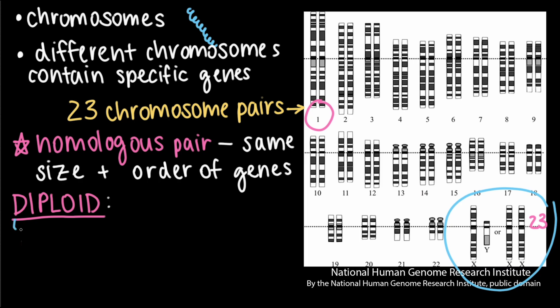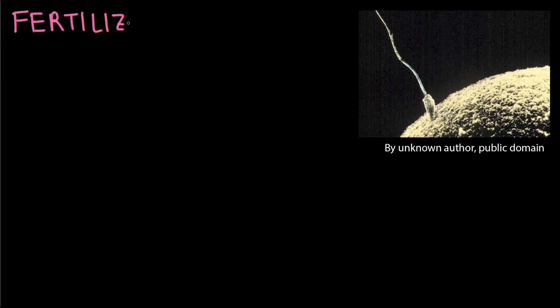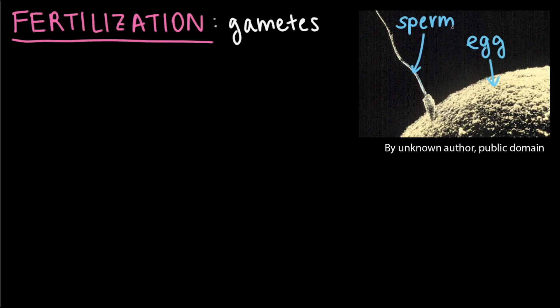Diploid organisms — the "di" indicating 2 — have cells with two sets of chromosomes organized into homologous pairs. Sexual reproduction occurs through a process called fertilization. During fertilization, cells called gametes, which are egg and sperm cells, fuse to form a new organism. Each parent contributes one gamete.